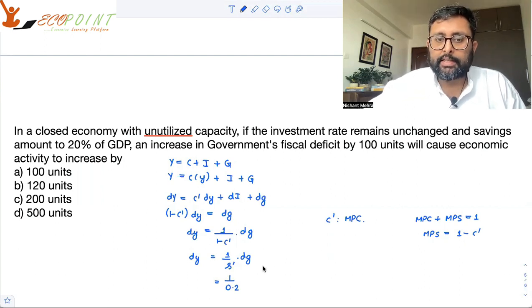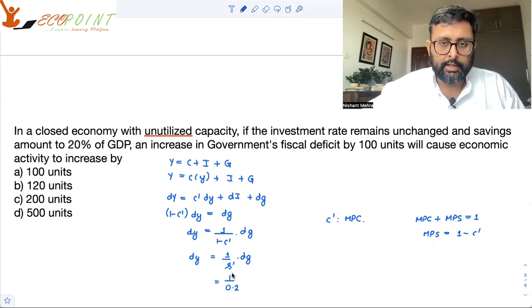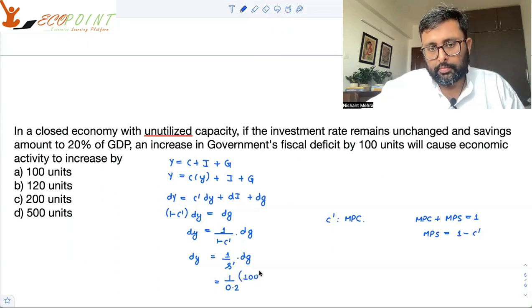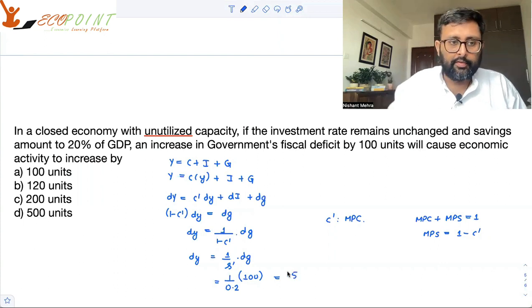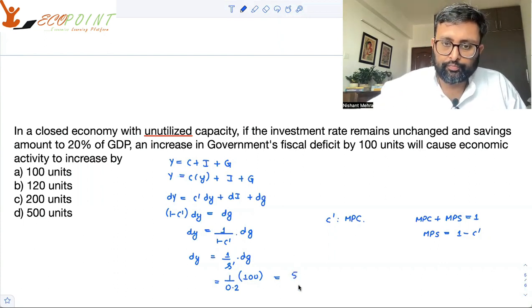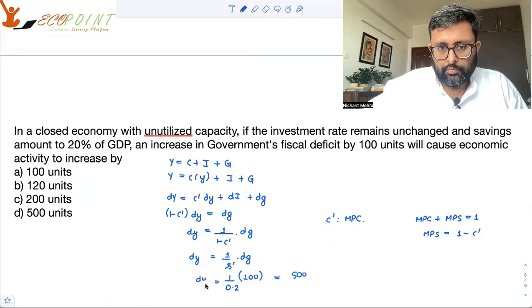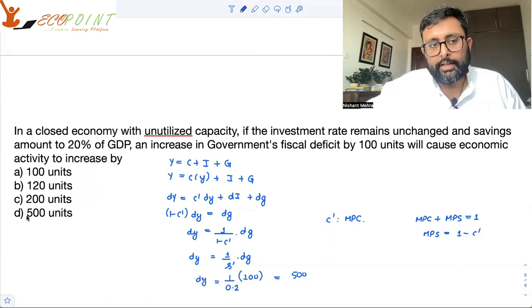And fiscal deficit is increasing by 100 units. So fiscal deficit is like increase in government's expenditure. So it is increasing by 100 units. So equilibrium income is going to increase by 500 units.